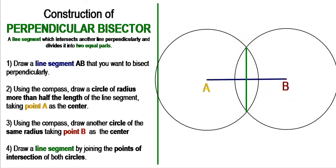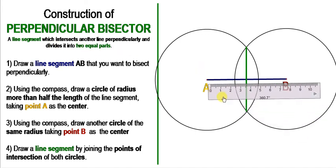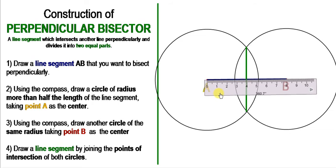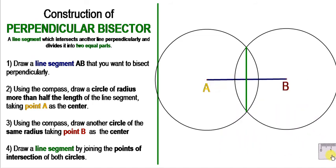Let's check whether it fulfills both requirements. First, it should create a 90 degree angle — you can see these two lines are perpendicular to each other, creating an angle of 90 degrees. Second, it should divide the line into two equal parts. Since we drew a line of 8 centimeters, it has been divided into two parts of 4 centimeters each. So we have successfully drawn a perpendicular bisector.